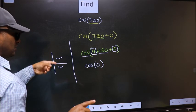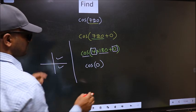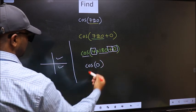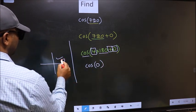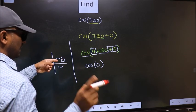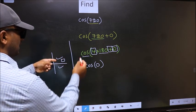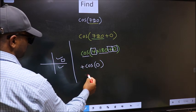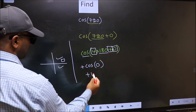So now to select the quadrant, we should look at this symbol. Here we have plus. That means angle lies in the first quadrant. And in the first quadrant, cos is positive. So we should put plus. So plus cos 0 is 1. This is our answer.